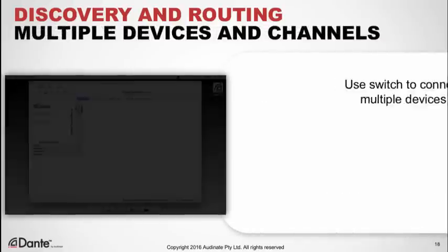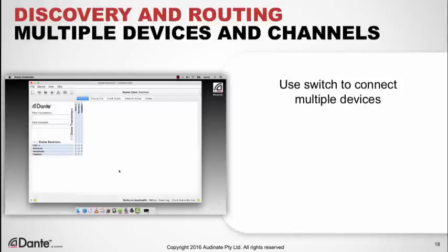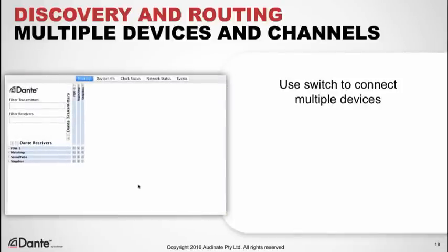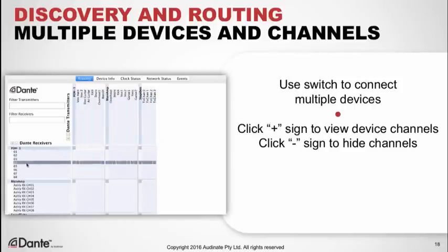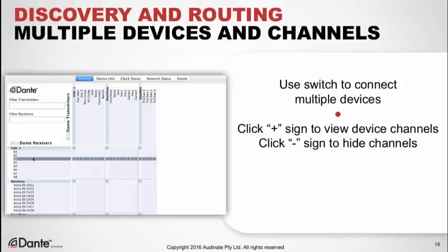Now let's use a switch to connect several devices at once — they appear automatically, just like the first. Now that we can see two or more devices, we can make a connection. Click the plus sign by the words 'Dante Transmitters' and 'Dante Receivers' to reveal the individual channels for all devices. You can also click the plus sign by each device name to open channels for only that device. Most Dante devices are both transmitters and receivers — analogous to sources and sinks for those who prefer that terminology.